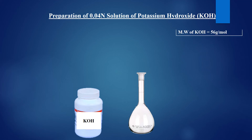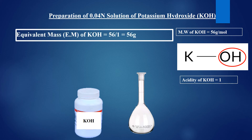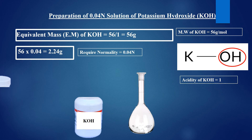To prepare a 0.04 normal solution of potassium hydroxide, first find out the molecular weight of potassium hydroxide, which is 56 grams per mole. Drawing its structure shows there is only 1 replaceable hydroxide ion, so its acidity is 1. Dividing 56 by 1 gives an equivalent mass of 56 grams. Multiplying 56 by 0.04 gives 2.24 grams. Take 2.24 grams of potassium hydroxide, dissolve it in water, and dilute the solution up to 1000 milliliters. This will be a 0.04 normal solution of potassium hydroxide.